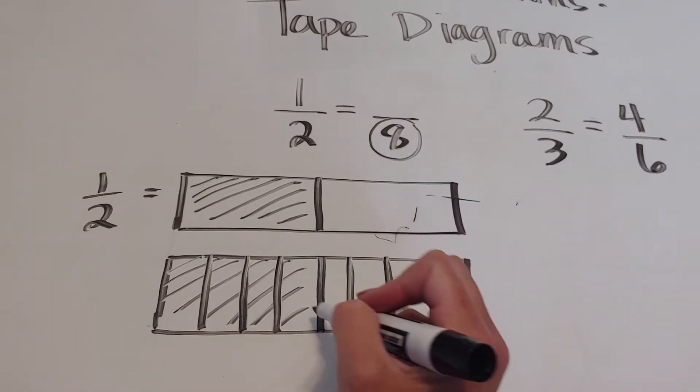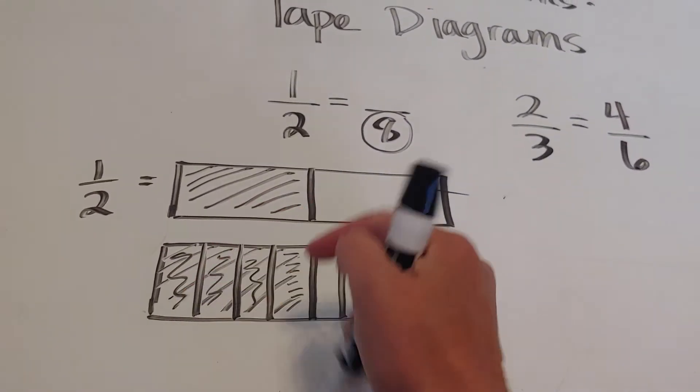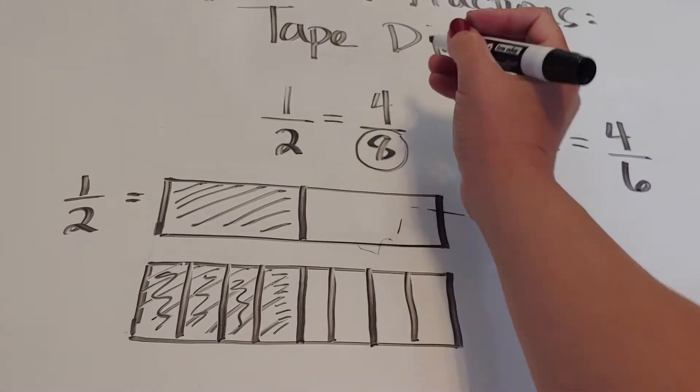Now it's in eight pieces. So the equivalent to one half is the same thing as four eighths.